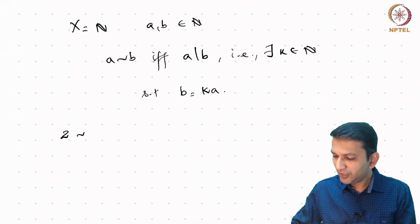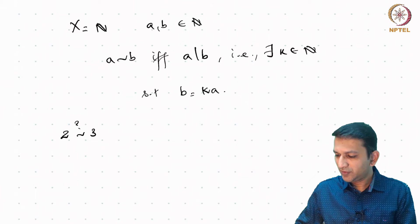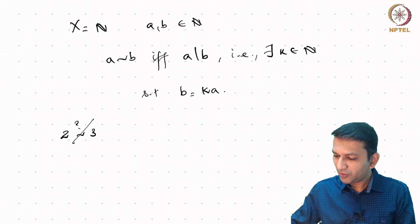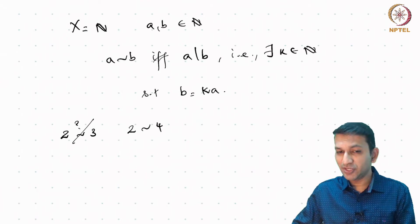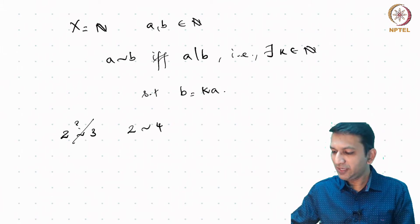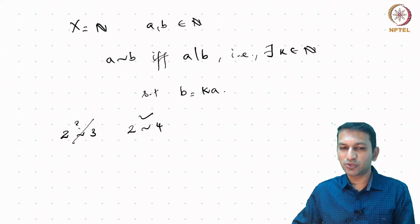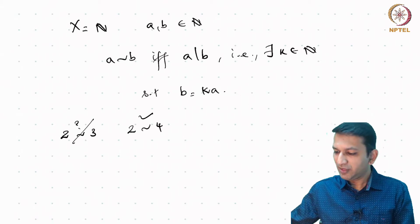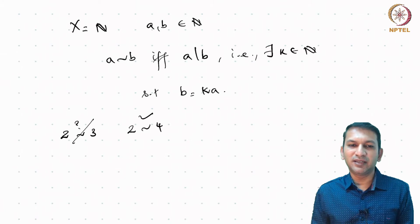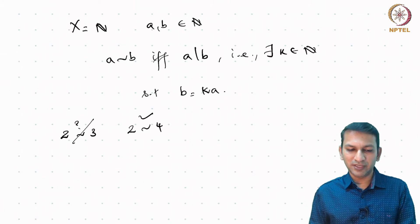We can ask: is 2 related to 3? Clearly, 2 does not divide 3, so this is not true. What about 2 and 4 — are they related? It essentially means asking whether 2 divides 4. We know that yes, 4 is 2 times 2. So these are examples of binary relations on the set of natural numbers. We can have many types of binary relations, and some of the properties that are often employed are the following.